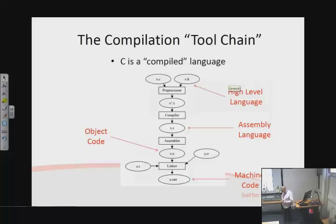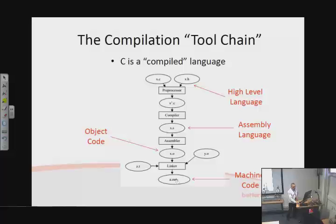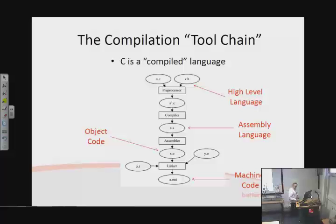It's also worth knowing — especially if you're familiar with MATLAB, which is an interpreted scripting language — that C is a compiled language. The source code, that human-readable text we see on screen, isn't actually what gets executed. It's consumed by a toolchain — most importantly a compiler — which generates through various intermediate steps down to binary machine code that's downloaded into the target device.